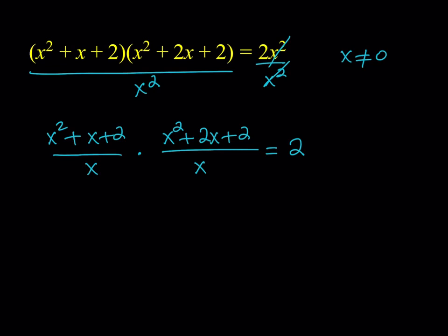Now after this, there's a reason why we split up the x and divide like that. Let's divide everything by x here. We're going to get x + 1 + 2/x, and the other expression is going to give us x + 2 + 2/x, and the product is equal to 2. Nice. Hopefully you got the method by now.